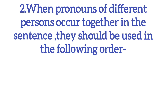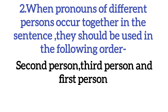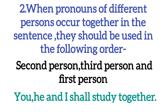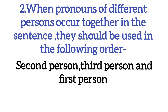Number two: when pronouns of different persons occur together in a sentence, they should be used in the following order. If different persons' pronouns are used in one sentence, they should be ordered as second person, third person, and first person. For example: 'You, he, and I shall study together.'